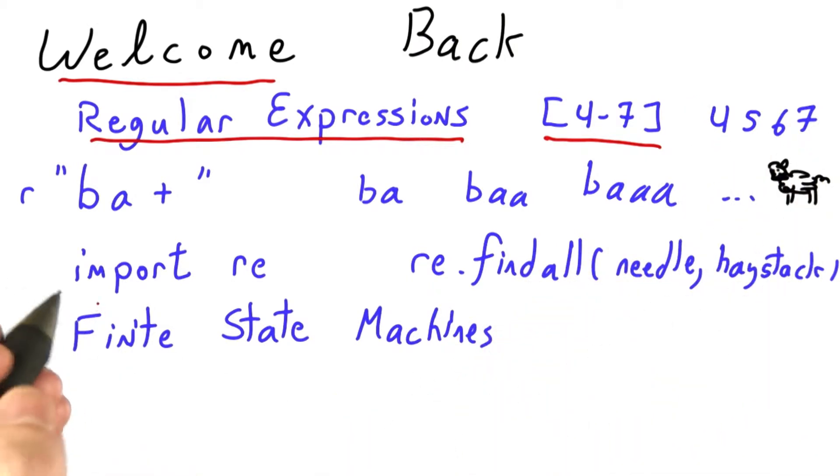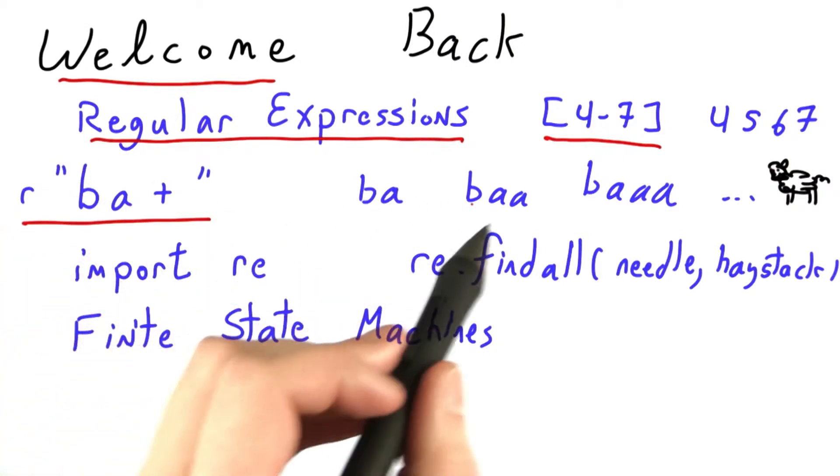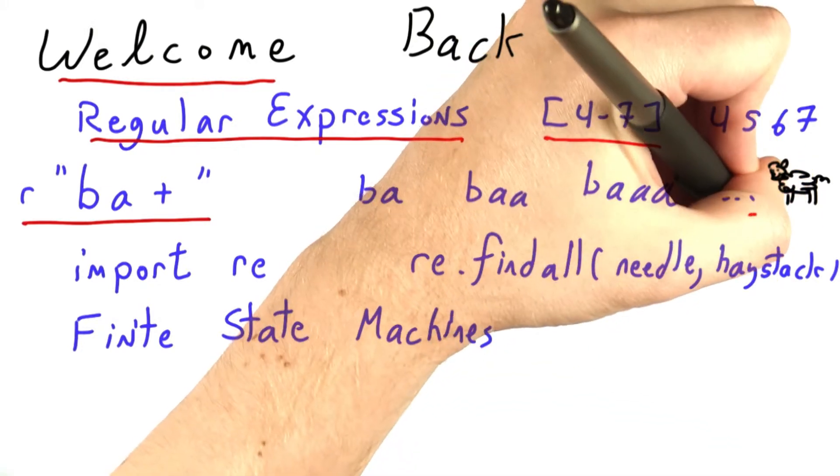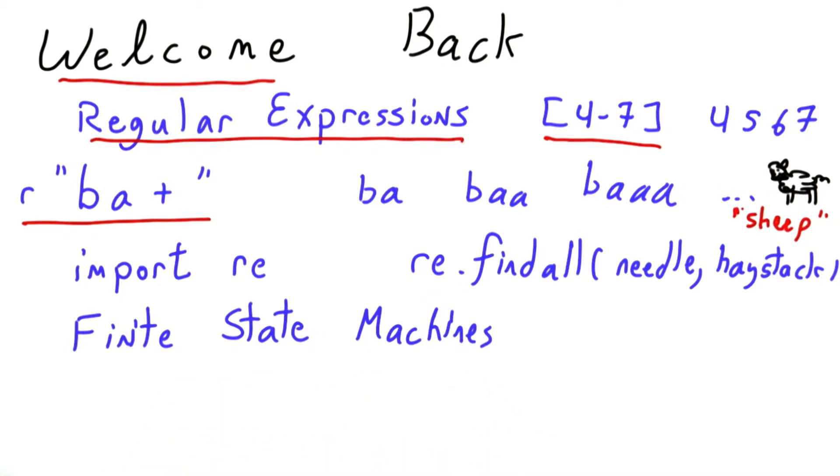And we learned to write more complicated regular expressions like this one, be A+. This plus means one or more copies of A's, yielding words like ba, ba, ba, and eventually yielding my sheep. And I assert that it's a sheep. You can tell because of the label, and those labels never lie.